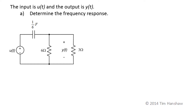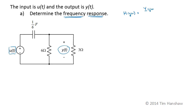We want to determine the frequency response of this circuit. The input is this voltage source here, U of T. The output is Y of T, the voltage across this 3-ohm resistor. Since we're looking for a frequency response, what we want is the ratio of the output phasor as a function of frequency to the input phasor as a function of frequency. So we're going to find H of J omega, which is going to be Y as a phasor divided by U as a phasor, both as functions of omega.